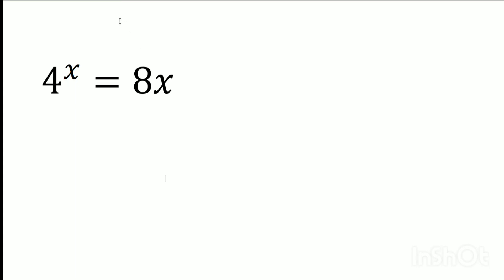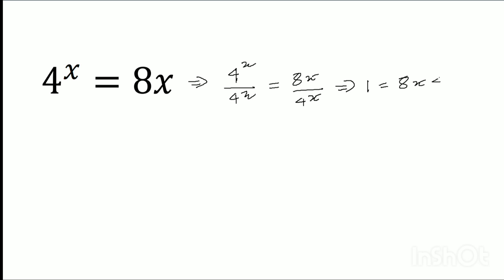Hello dear friends, welcome to my channel. Today's discussion is an Olympiad problem — German Maths Olympiad: 4 to the power x equals 8x. I can write this as 4 to the power x divided by 4 to the power x, into 8 times x divided by 4 to the power x, which gives us 1 equals 8x times 4 to the power minus x.